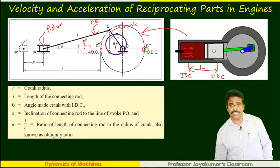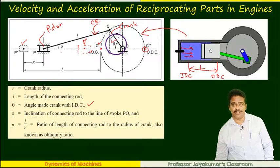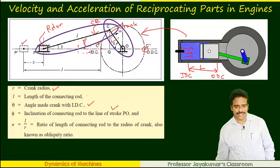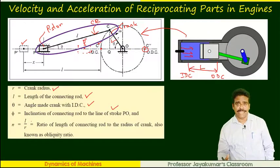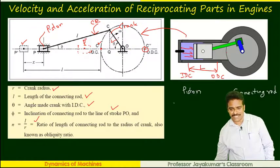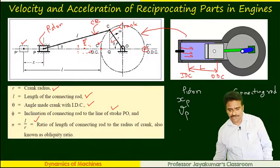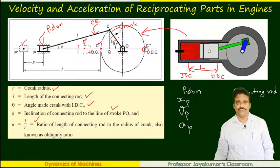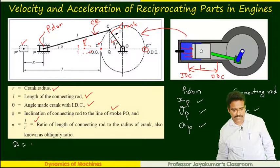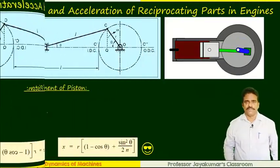Let theta be at any given instant the crank angle. At that position, the angle made by the connecting rod with the line of stroke I call phi. R is crank radius, L is length of the connecting rod, n is obliquity ratio, which is the ratio between length of connecting rod and the crank. I need to determine the displacement of piston, velocity of the piston, and acceleration of the piston, without which we cannot determine inertia force. We know that angular velocity of the crank equals 2 pi N by 60 if I know the RPM.